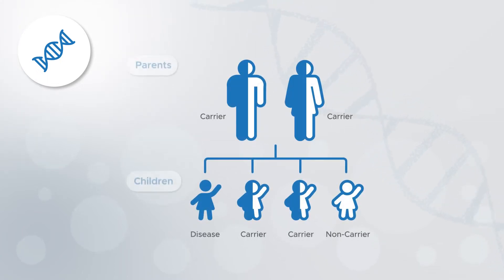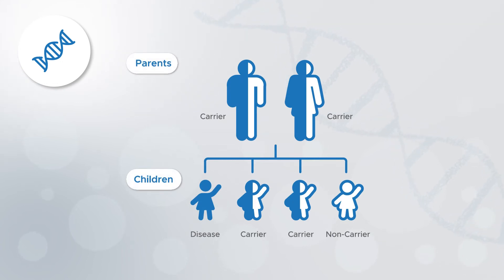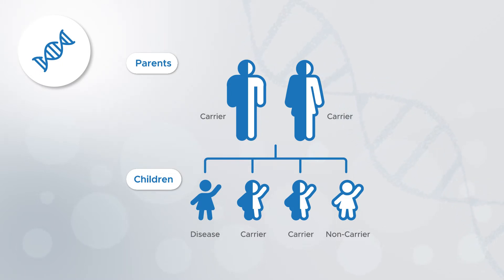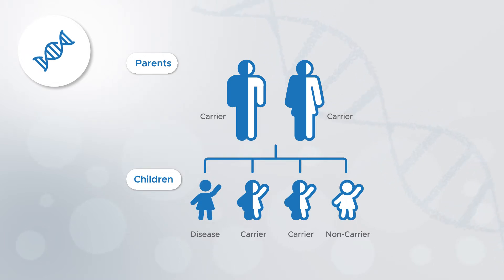Our bodies know how to make these enzymes because the recipe is held in our genes — more specifically, in a pair of genes: one inherited from your mother and the other from your father. Homocystinuria occurs when both copies of the gene don't work correctly. This is called autosomal recessive inheritance.